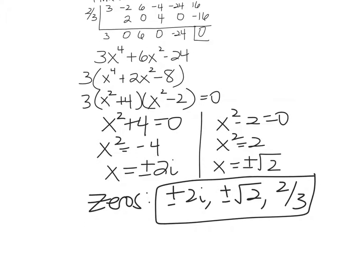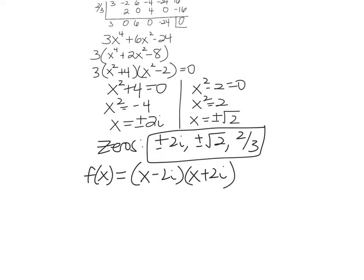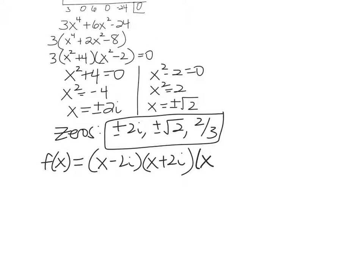Now, the extra step here is they might ask you to now write them all as linear factors. So we're going to rewrite our polynomial as linear factors. And what we would do is we would do (x - 2i)(x + 2i) times (x - √2)(x + √2).